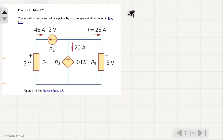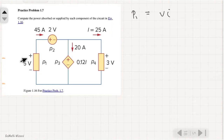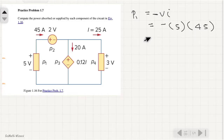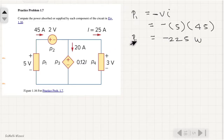For P1, the formula for solving power is volts times current. The current enters from negative to positive, so this must be negative since it enters at the negative terminal. Substituting the values: the voltage is negative 5 volts and the current is 45 amperes. So negative 5 times 45 equals negative 225 watts. This is our power P1.